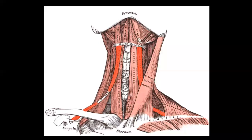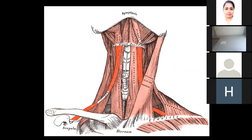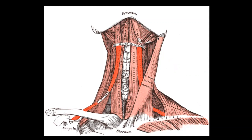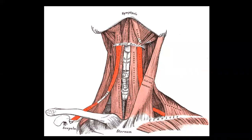The four triangles are: submental triangle, submandibular triangle, carotid triangle, and muscular triangle. The submandibular triangle will be studied separately in detail as it is a long question topic. The floor of the submandibular triangle is formed by two muscles: the mylohyoid muscle and, deep to it, the hyoglossus muscle — which runs from the hyoid bone to the tongue.